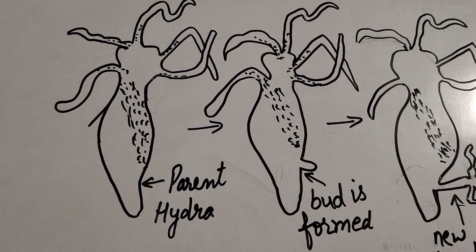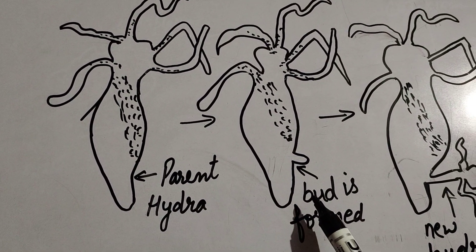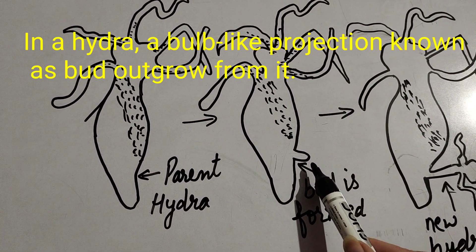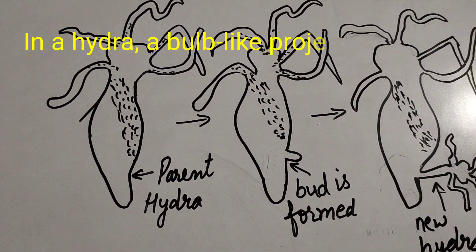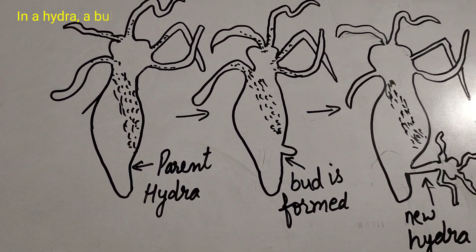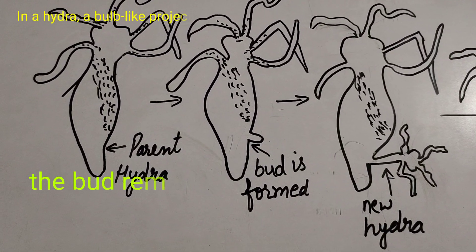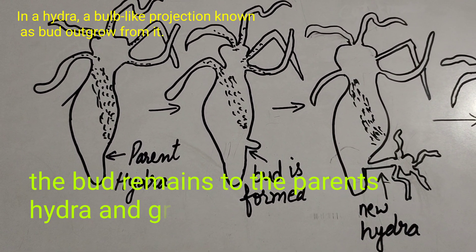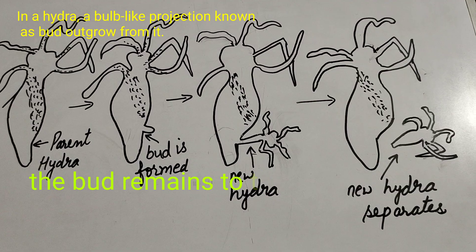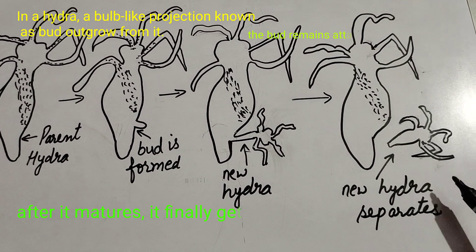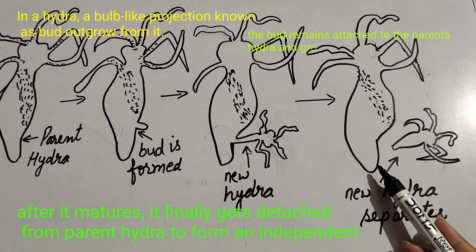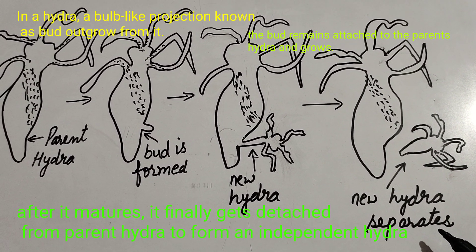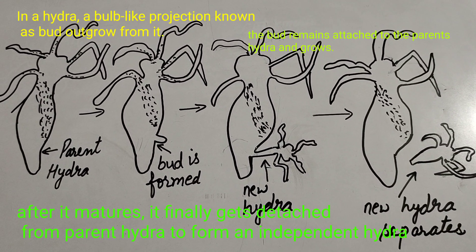In a hydra, a bulb-like projection known as a bud outgrows from it. The bud remains attached to the parent hydra and grows. After it matures, it finally gets detached from the parent hydra to form an independent hydra.